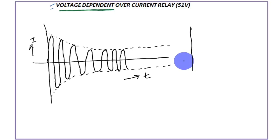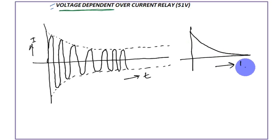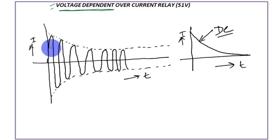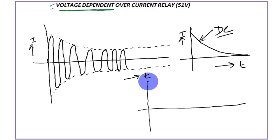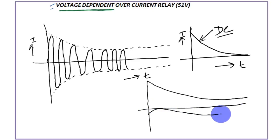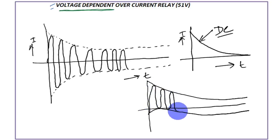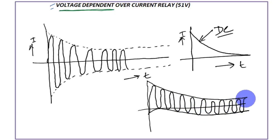There is also a DC component of decaying nature. When this DC component mixes with the symmetrical AC component, the envelope shifts further upward. The resulting combined characteristic is a sinusoidal curve riding on a decaying DC offset, so the overall envelope rises higher initially before settling. This is the generator fault current waveform when a fault happens at the generator terminal.